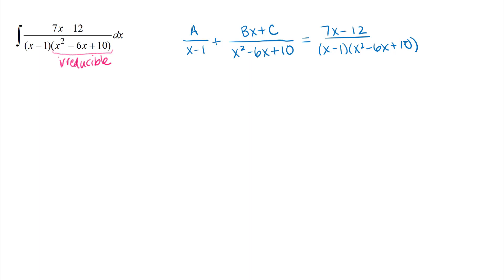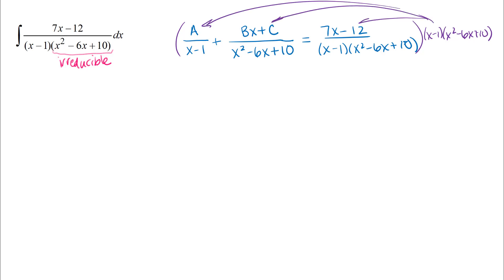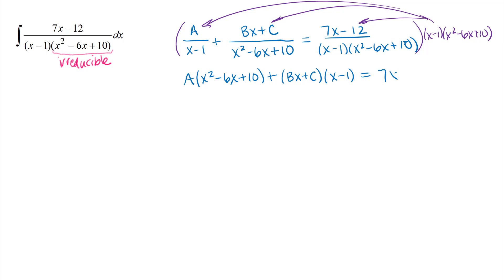When we do the partial fractions, we'll multiply through by the common denominator, x minus one times x squared minus 6x plus 10. When I multiply A over x minus one by the common denominator, the x minus one factors cancel and I'm left with A times x squared minus 6x plus 10. When I multiply the second fraction, Bx plus C over x squared minus 6x plus 10, the quadratic cancels and I'm left with Bx plus C times the quantity x minus one. On the right side, everything cancels and we're left with 7x minus 12.